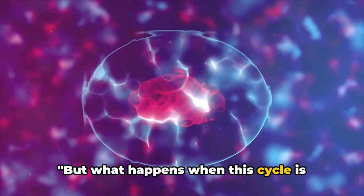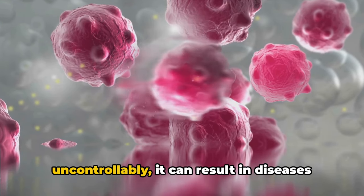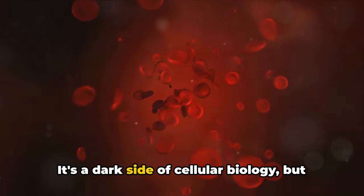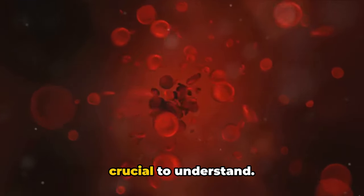But what happens when this cycle is disrupted? When cells divide uncontrollably, it can result in diseases like cancer. It's a dark side of cellular biology, but crucial to understand.